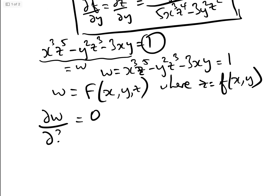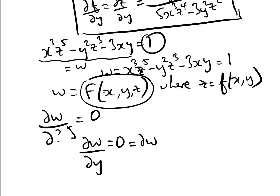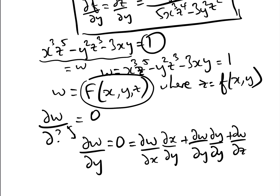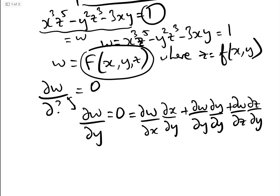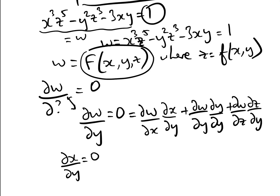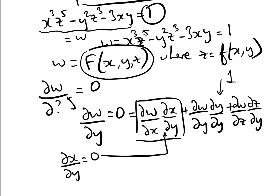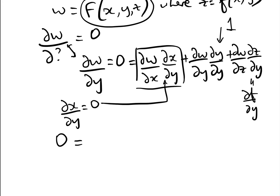We can use the chain rule: since dw/dy = 0, by the chain rule that equals (∂w/∂x)(dx/dy) + (∂w/∂y)(dy/dy) + (∂w/∂z)(dz/dy). Since x and y are independent, dx/dy = 0, so that term vanishes. dy/dy = 1, and dz/dy = df/dy because z = f(x,y).